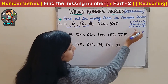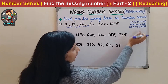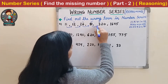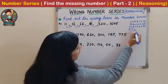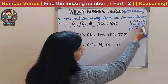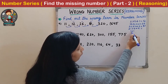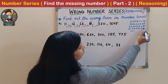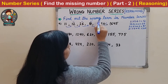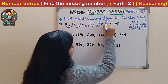So the pattern is: multiply by consecutive numbers 1, 2, 3, 4 and add that same number. Now check the next: 81 × 4 + 4 = 324 + 4 = 328. But the number given is 320. So instead of 320 it should be 328. The wrong term is 320.